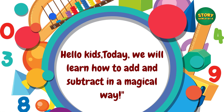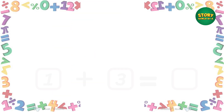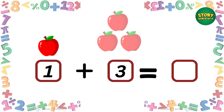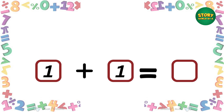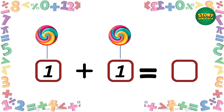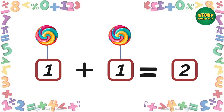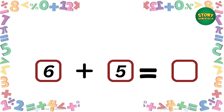Hello kids! Today we will learn how to add and subtract in a magical way. We have one apple — if we add three more apples, how many do we have? Yes, we have four apples! We have one candy — if we add one more candy, how many do we have? Yes, we have two candies!